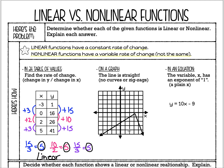Now we're going to look at a graph. On a graph, the way we know a function is linear is that it's going to be a straight line — and you have to be careful — it means one continuous straight line. It doesn't mean a straight line going up and then a straight line going down. No zigzags, no curves.